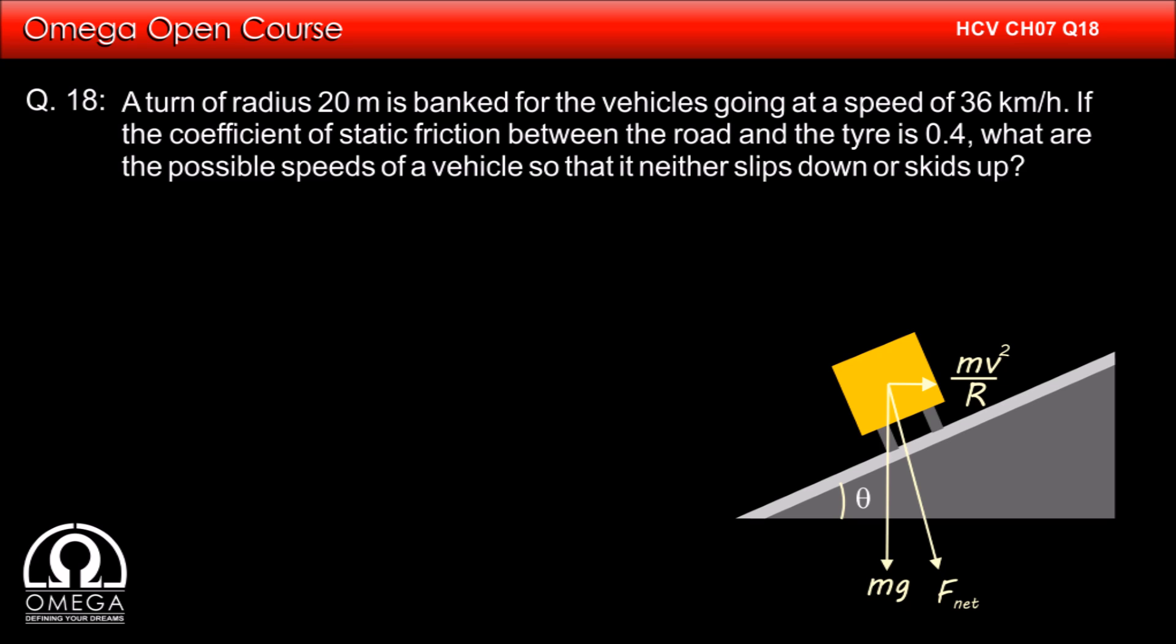Let F net be the resultant of these two forces. From simple geometry, we know that the gravity will make an angle theta with the direction of normal. From our discussion on angle of friction, we know that the vehicle will start sliding down if F net makes an angle more than tan inverse mu with the normal.